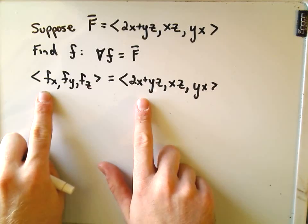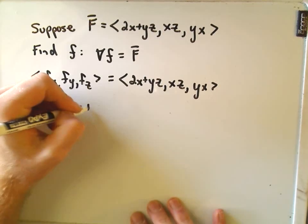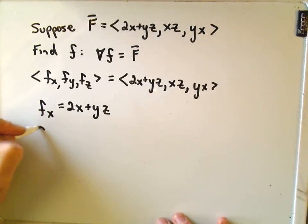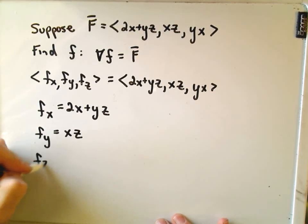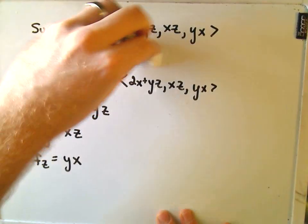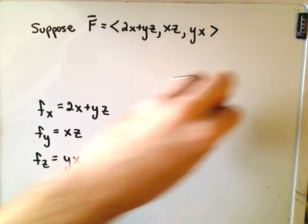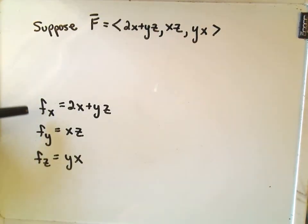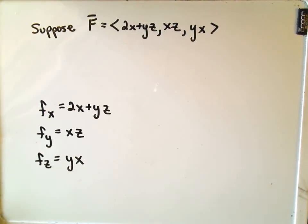So the partial with respect to x is going to have to equal the 2x plus yz portion. The partial with respect to y would have to equal xz. And the partial with respect to z is going to equal yx. We've got a little system of equations here. What we're going to start doing is integrating with respect to either x, y, or z — that'll get us back to our original function little f. Then we'll start taking partial derivatives and hopefully we can deduce what function we need.